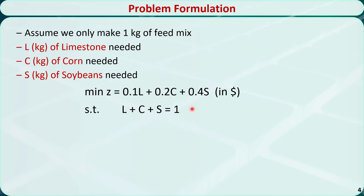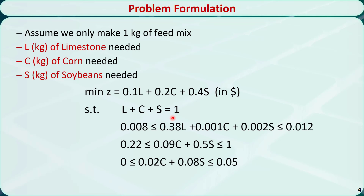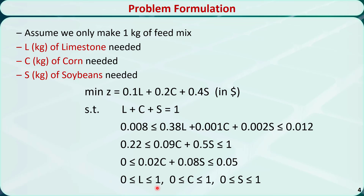The feed mix is made of only limestone, corn, and soybeans, so these components should add up to 1 kg. The feed mix must contain a certain amount of nutrients. The amount of calcium is bounded by 0.008 and 0.012. The amount of protein should be at least 0.22 but should not exceed 1. The amount of fiber should be at most 0.05 but will never be less than 0. The amount of each component should be non-negative and each should not exceed 1, which is the total.